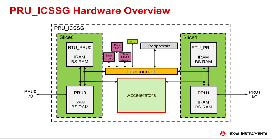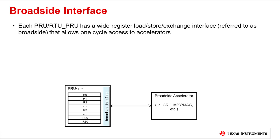The PRU ICSSG cores all use a special interface called the broadside interface to communicate with the accelerators. The broadside interface is optimized for wide data transfers of 32 bytes and enables single cycle access to the accelerators. This allows the broadside interface to move more data at a faster rate than the conventional load store interface that is used to access all other subsystem and SoC resources.